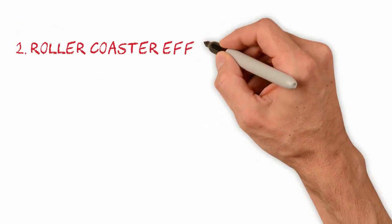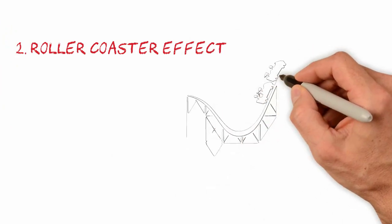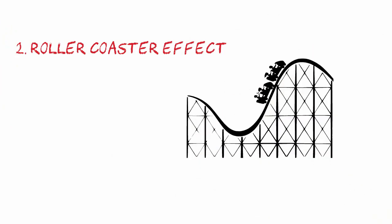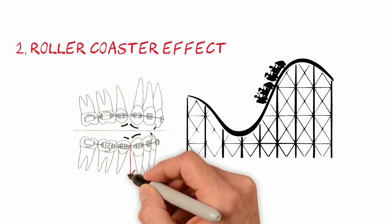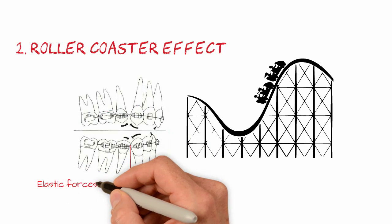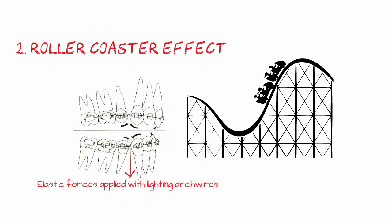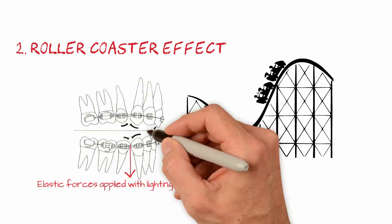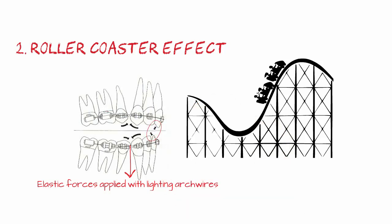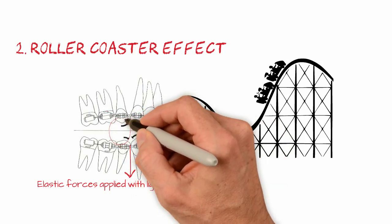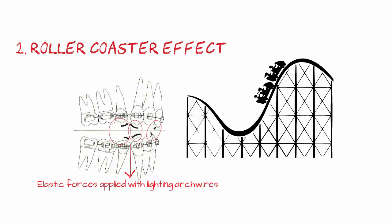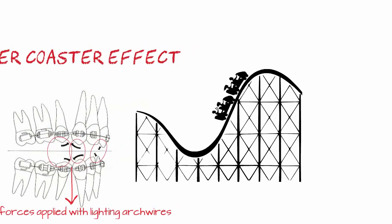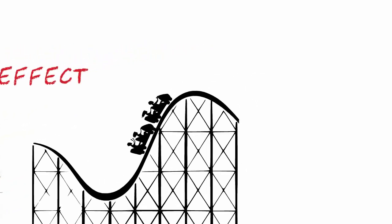The second analogy is that of the rollercoaster effect. This effect results from a very basic error in orthodontics. When in treatments with extractions, the professional applies elastic forces in the canines with light leveling archwires, a number of side effects can occur, such as deepening the anterior bite, opening the lateral bite, and unwanted tippings and rotations into the extraction sites. The set of iatrogenic movements can be called the rollercoaster effect.